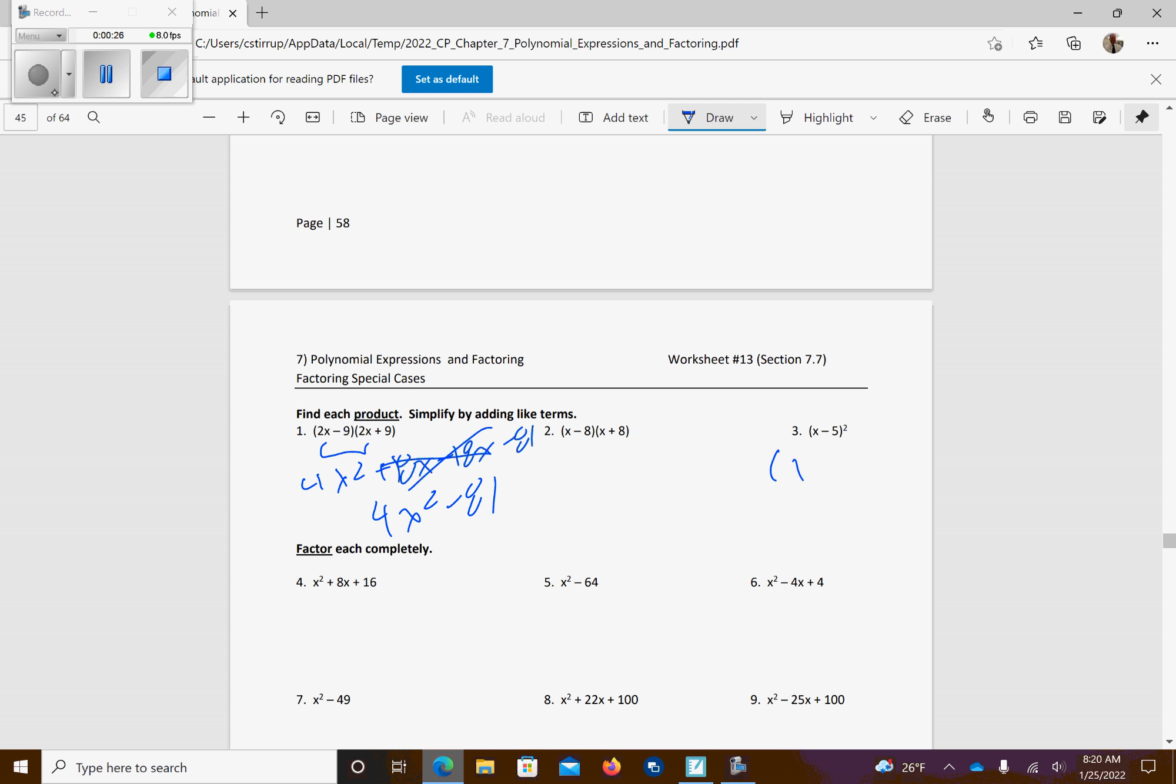Next one, we have 2x minus 5s that we're multiplying together. So that's going to give me x squared minus 5x minus 5x plus 25, so it's x squared minus 10x plus 25. This is a special case, so yes, you can just multiply it out like normal.